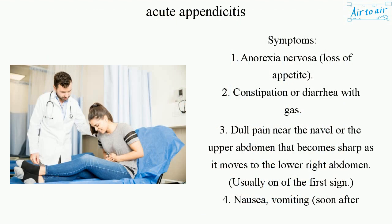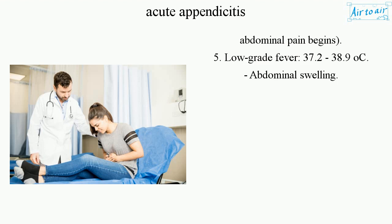Symptoms: 1. Anorexia, loss of appetite. 2. Constipation or diarrhea with gas. 3. Dull pain near the navel or upper abdomen that becomes sharp as it moves to the lower right abdomen — usually one of the first signs. 4. Nausea and vomiting soon after abdominal pain begins. 5. Low-grade fever of 37.2–38.9°C. Abdominal swelling.